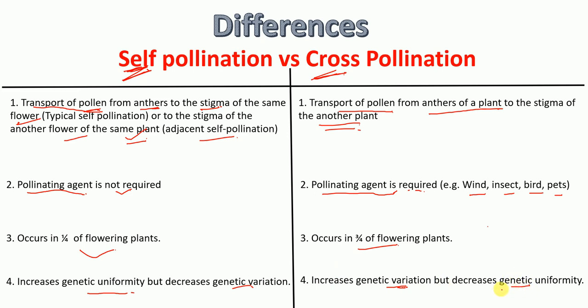Finally, examples of self-pollination include peanuts, whereas examples of cross-pollination include raspberries and blackberries. I hope this video was helpful. Please like and share the video and subscribe to our channel. Thank you very much.